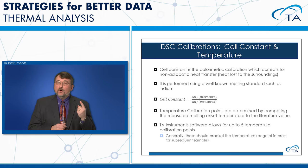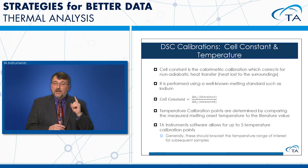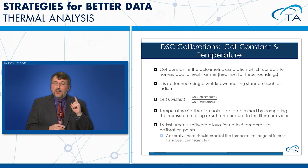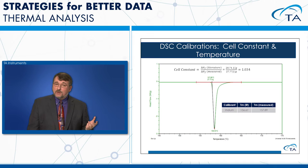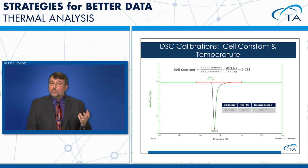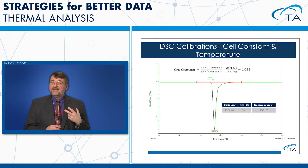Here's an example of an indium calibration run for cell constant and temperature. Integrating the peak, we get a measured heat of fusion of 27.77 J/g against a literature value of 28.71 J/g, giving a cell constant of 1.03 — right around one, slightly above, which is a very good result. For temperature calibration from the same file, we measure an onset of 157.89°C compared to the literature value of 156.61°C, so we apply a correction to get the right temperature.